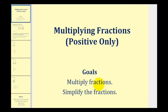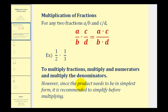Welcome to a lesson on multiplying fractions. To multiply two fractions, we multiply the numerators and multiply the denominators. So if we have two fractions in the form of a over b and c over d, the product will have a numerator of a times c and a denominator of b times d.